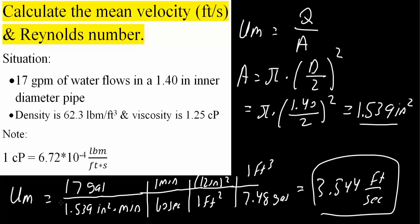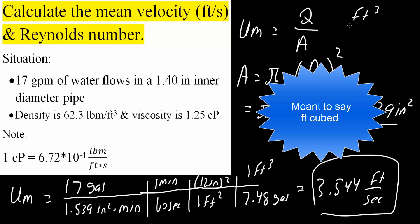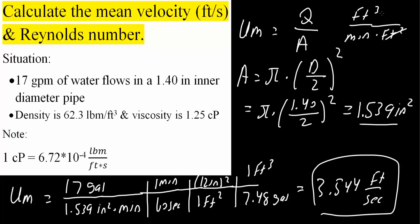Does this actually make sense? We are calculating average velocity, and velocity is like meters per second — in our case, feet per second, which is what we want. Average velocity equals volumetric flow rate divided by cross-sectional area. Volumetric flow rate is volume over time, and area is just area. So for example, feet cubed per second divided by feet squared gives feet per second — that's why the result is a velocity.